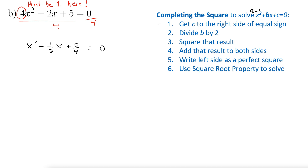Step 1: get c to the right side. So we're subtracting 5 fourths from both sides, giving us x squared minus 1 half x equals negative 5 fourths. Now for step 2, we take our b term — which here is negative 1 half — and divide it by 2. I'll just take the 1 half; it doesn't matter if we bring the negative along or not because we're going to square it.